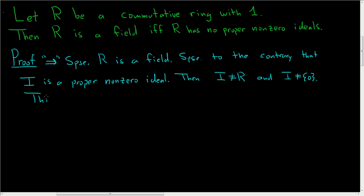So this means there exists an element A in I such that A is not equal to 0. It's a non-zero ideal. And since R is a field, A inverse exists. That's what it means to be a field - every non-zero element is a unit.